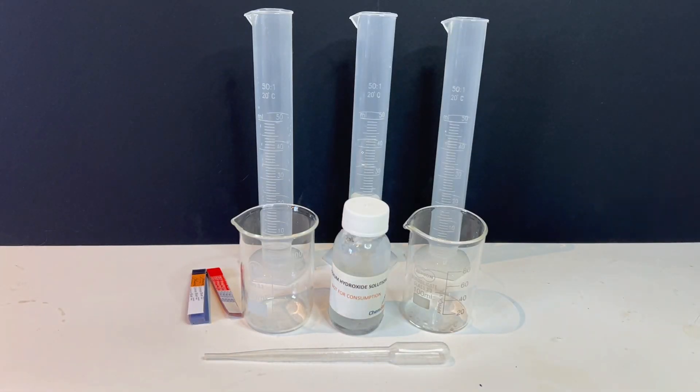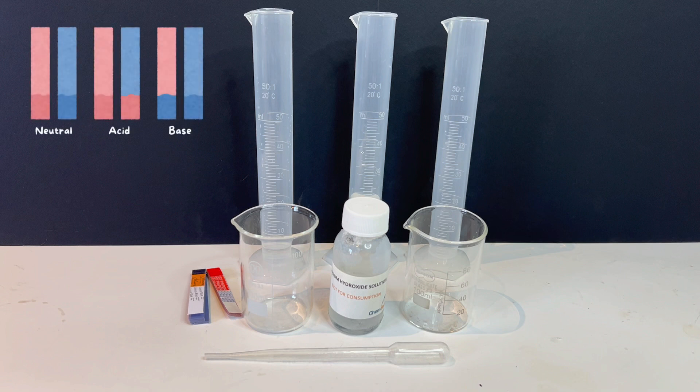We are going to use litmus paper to test whether substances are acidic or basic. Litmus paper is an indicator that changes color depending on the pH of a substance. Blue litmus turns red in acids and red litmus turns blue in a base.